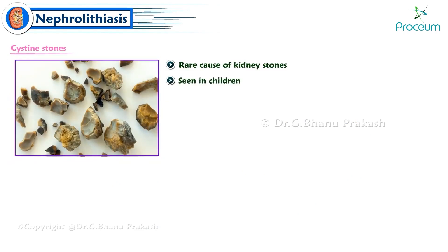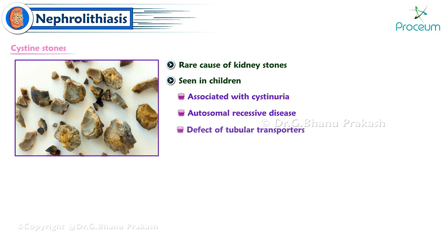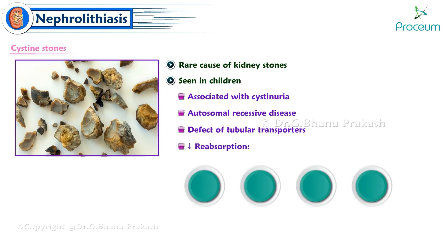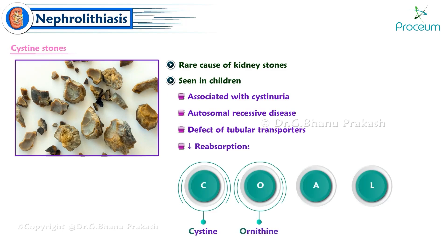Cystine stones are a rare cause of kidney stones seen in children. They are associated with cystinuria, an autosomal recessive disease. Cystinuria is an autosomal recessive defect of tubular transporters leading to decreased reabsorption — remembered by the mnemonic COAL: Cysteine, Ornithine, Arginine, Lysine.